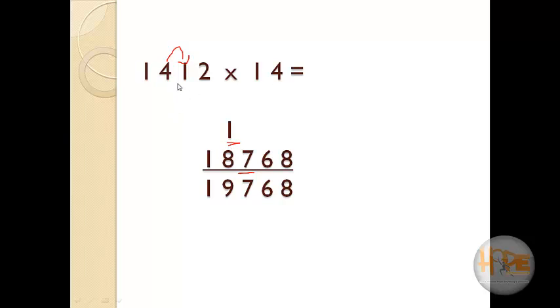Now 4 into 1 is equal to 4, and 4 plus 2 is equal to 6. So put 6 here, and 2 into 4 is equal to 8. So the answer is: 1 is as it is, 8 plus 1 is equal to 9, 7 is as it is, 6 and 8. So the answer is 19,768.